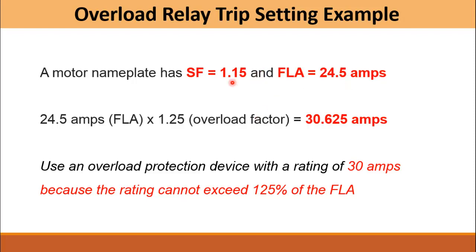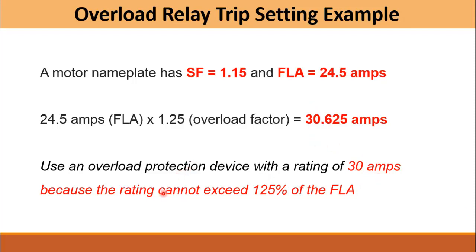Since the service factor is 1.15, the overload factor is 125%, giving a maximum setting of 125% × 24.5 = 30.625 A. The standard overload device comes in a 30 A rating, so we select 30 A because the rating cannot exceed 125% of the full load ampere. If you cannot find the exact current rating, select the relay with the next lower setting from the maximum calculated current.